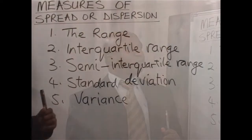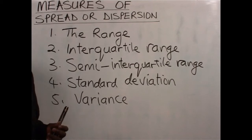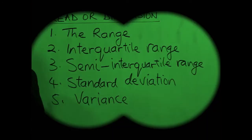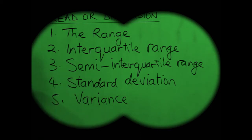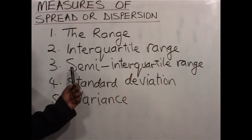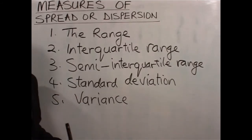The range is usually based on the extreme values. It is the difference between the highest value and the lowest value. The interquartile range is the difference between the quartiles that we shall look at. Then we have the semi-interquartile range, standard deviation, and variance. In today's lesson, we shall look at the first three: the range, the interquartile range, and the semi-interquartile range. We shall look at the standard deviation and the variance in a later lesson.